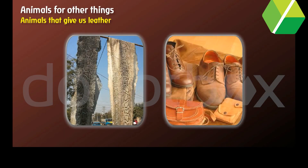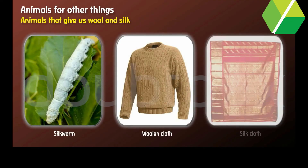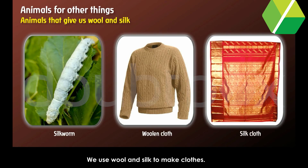Animals that give us leather. The skins of some animals are used as leather. We use leather to make shoes, bags, belts, purses and many other things. Animals that give us wool and silk. We get silk from silkworms. We use wool and silk to make clothes.